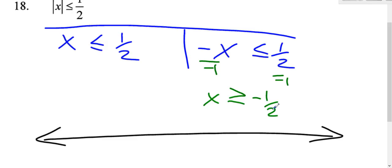Negative one half is more to the left than positive one half. Since they're both or equal to, they're both going to get brackets.